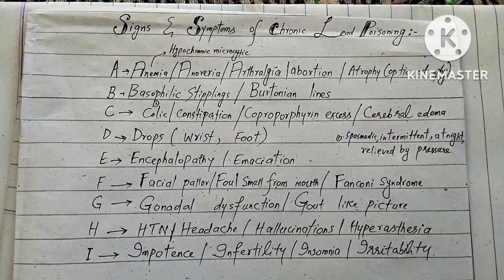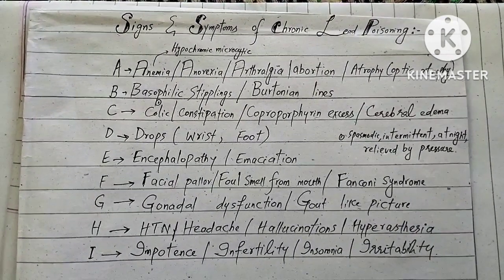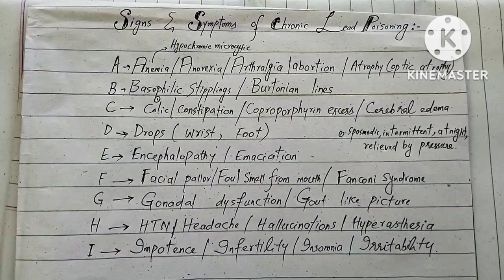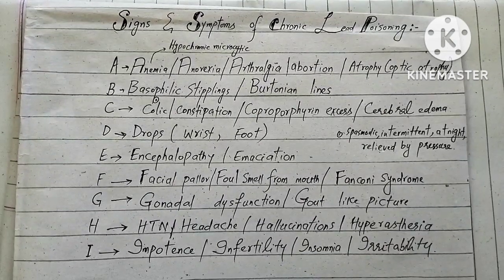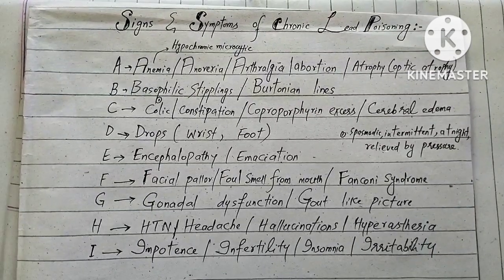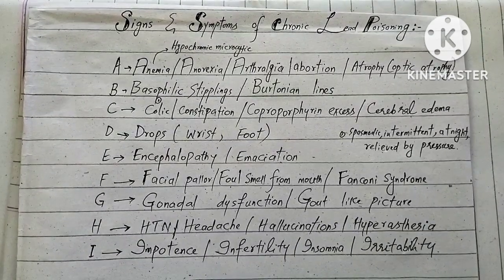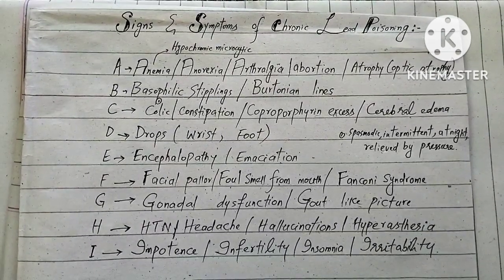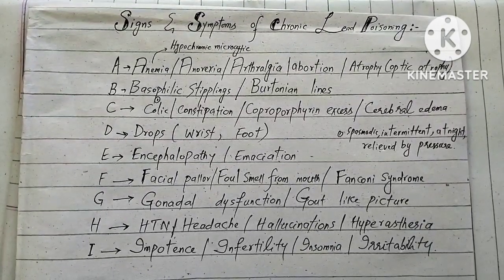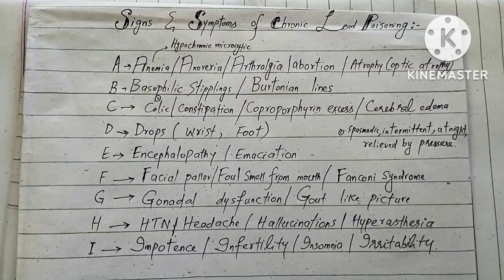Assalamu alaikum wa rahmatullah and welcome back to my channel Best Medical Mnemonics. Today I will discuss in an easy and efficient way how to memorize the signs and symptoms of chronic lead poisoning. Chronic lead poisoning is also called plumbism. Lead is a heavy metal, and when ingested in a fatal dose it is very harmful and leads to the following signs and symptoms, which are easily remembered by the following alphabets.